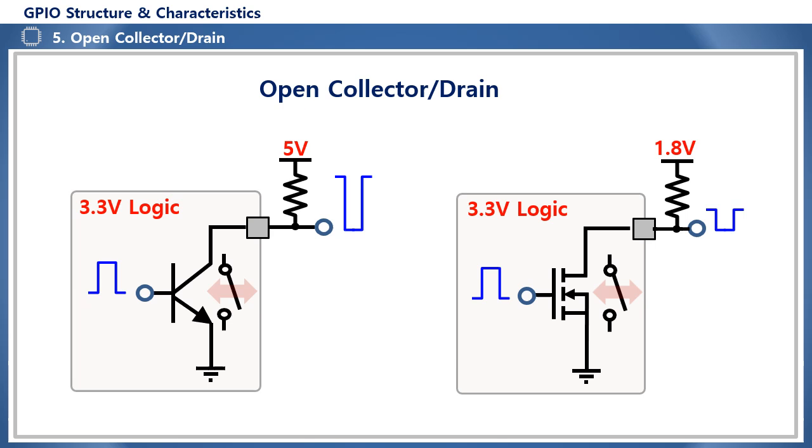Open drain is a structure in which the IC port is connected to the drain of the N-type MOSFET, and a signal input is entered to the gate. When logic high is input, the drain and source are turned on and become low, and when logic low is input, the drain and source are turned off and the drain becomes floating. Therefore, a pull-up resistor must be connected to the drain. When the gate is high, the drain is low, so it has an inversion characteristic.